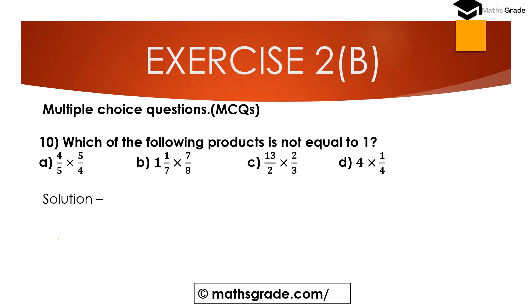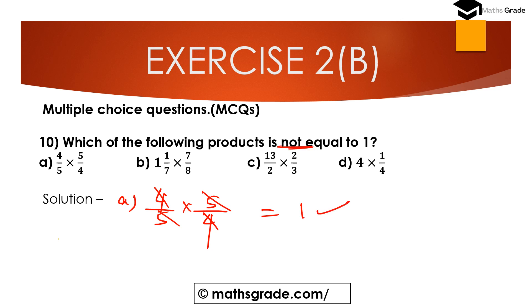Question number 10 is a multiple choice question: which of the following products is not equal to 1? Option A is 4/5 multiplied with 5/4. Evaluating this: 4 and 4 cancel, 5 and 5 cancel, then it equals 1. Since option A is equal to 1, but we need the product that is not equal to 1, option A is not the answer.